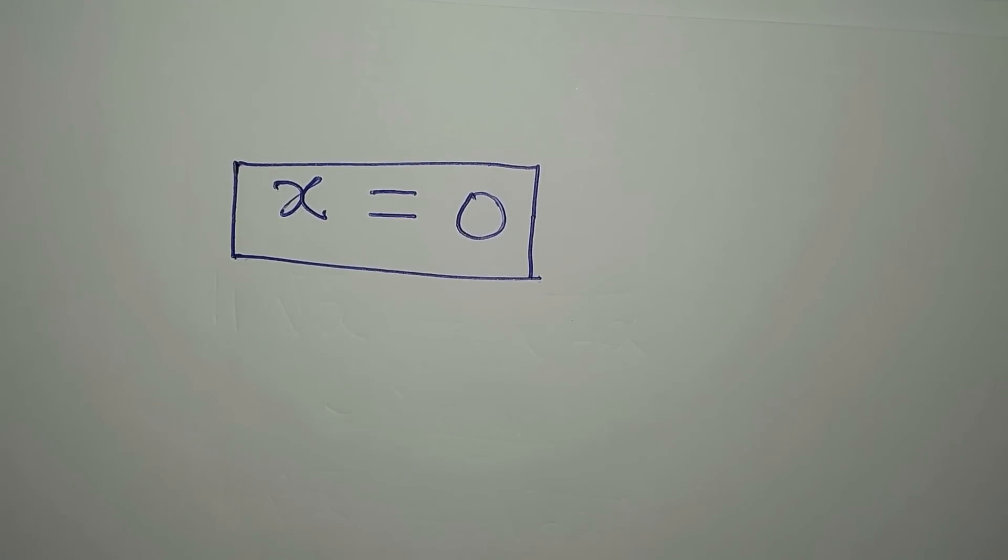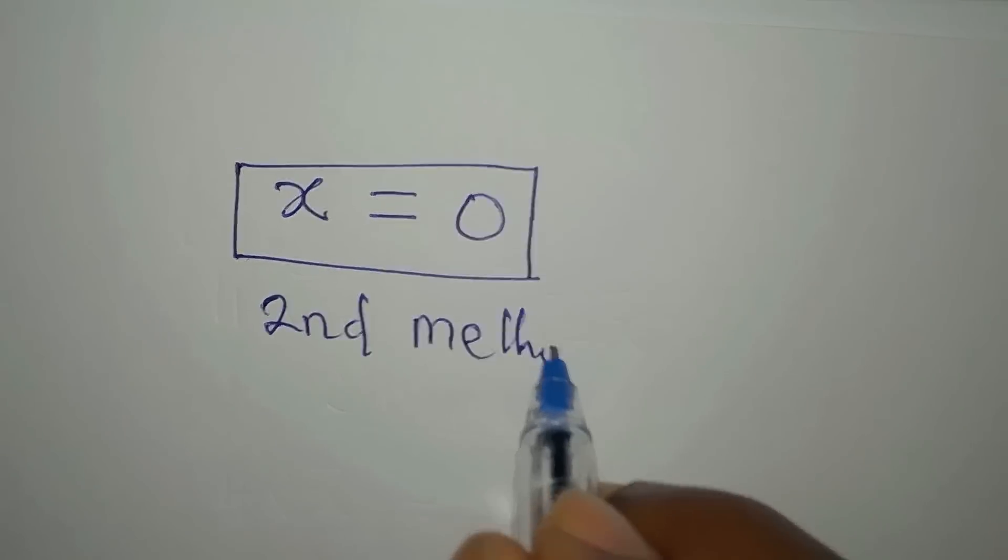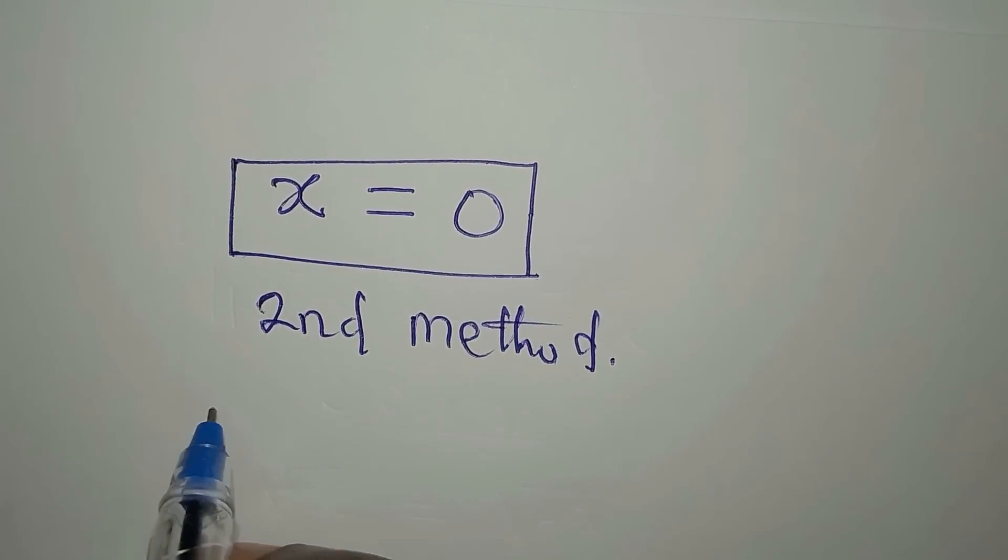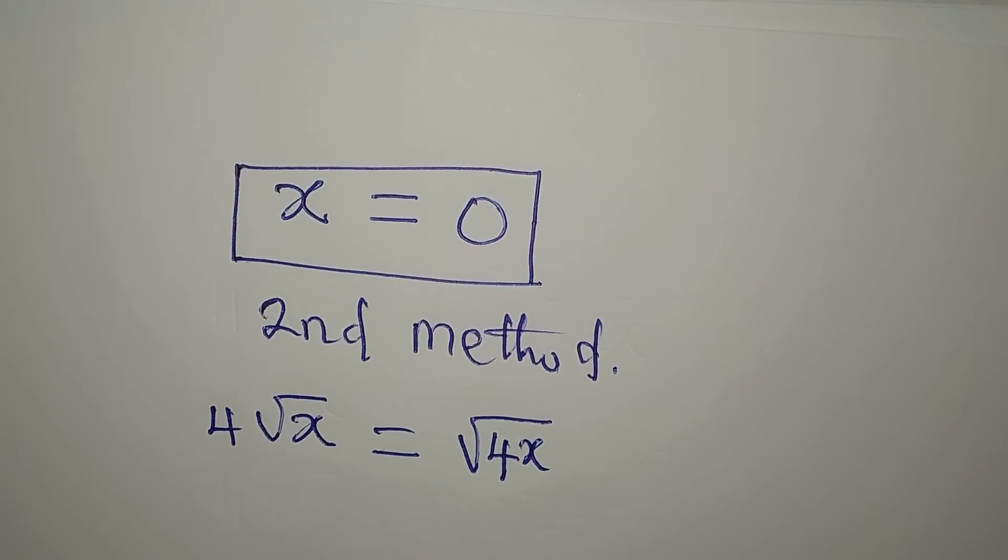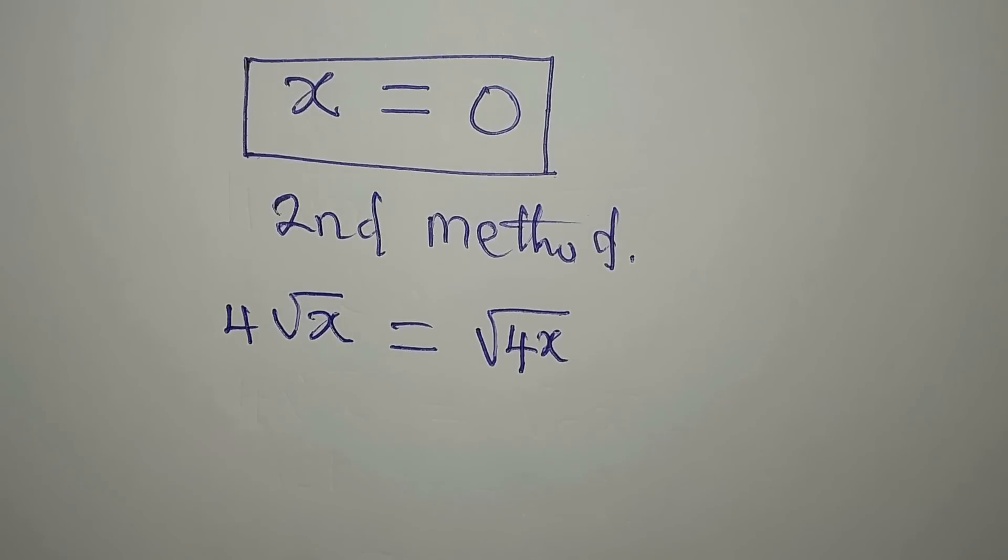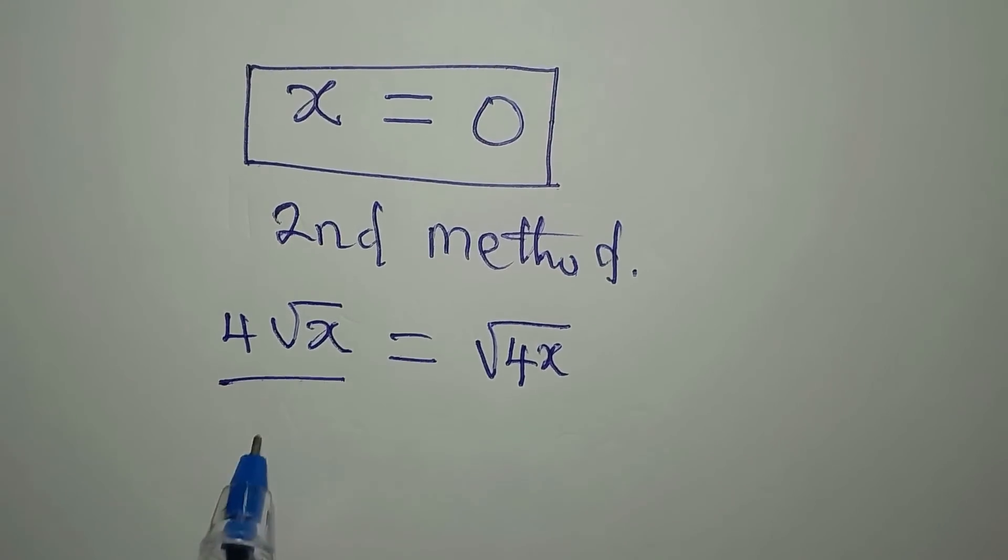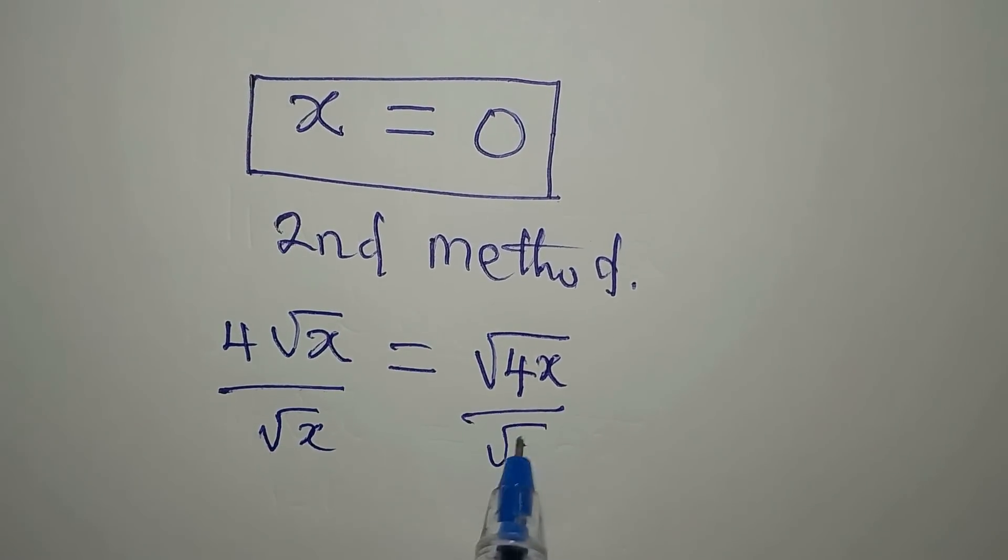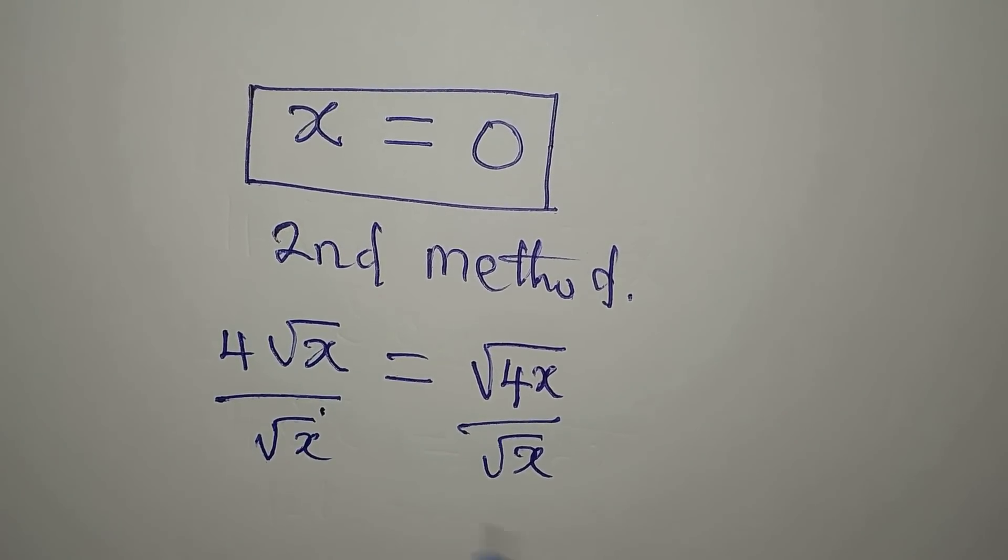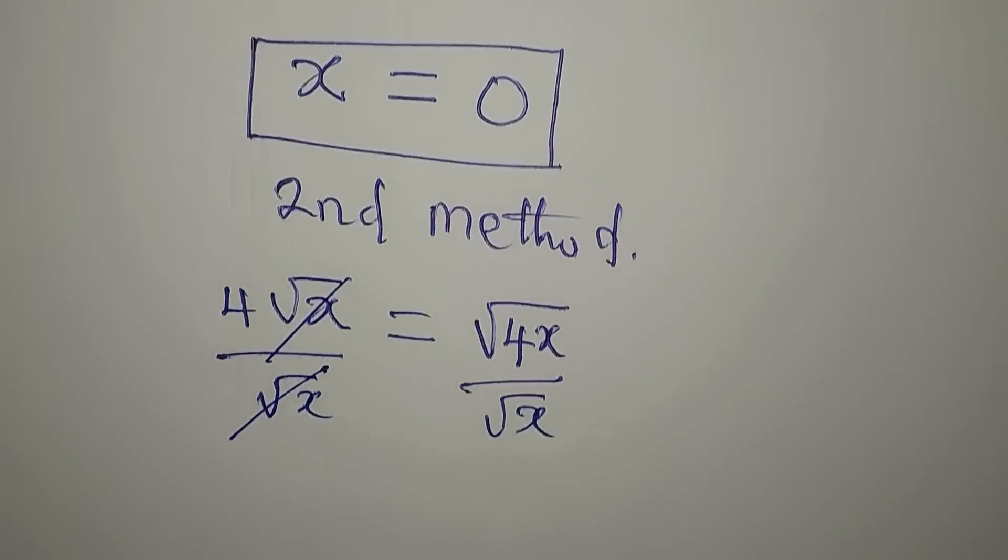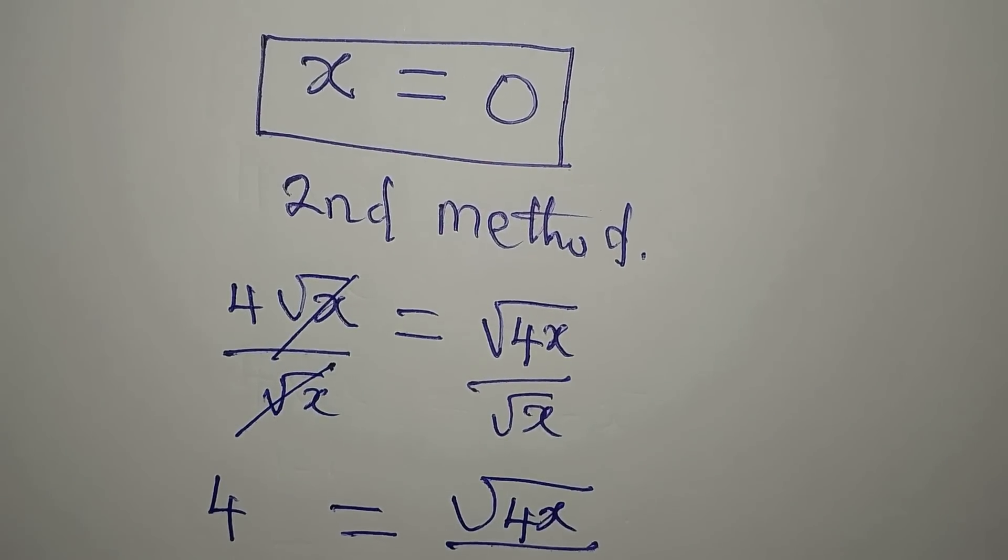So the next is the second method. Let's look at the second method. The equation is 4 root x equals square root of 4x. From here, the second method, why don't we divide both sides by root x. So that 4 now is equal to square root of 4x over square root of x.